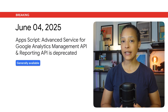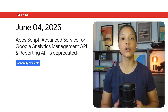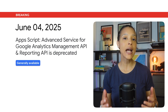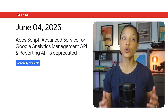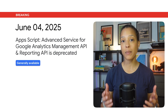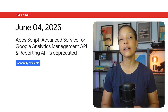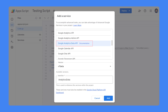Google Analytics 4 has replaced Universal Analytics, which means the Apps Script Advanced Service for the Google Analytics Management API and Reporting API is deprecated. Use the Google Analytics Data API Advanced Service instead.